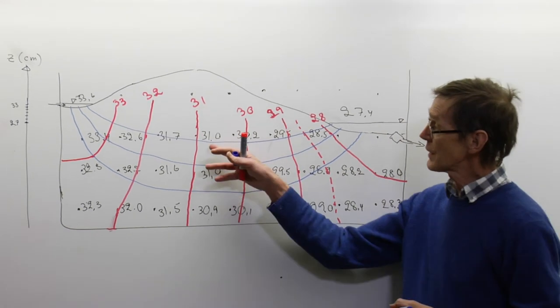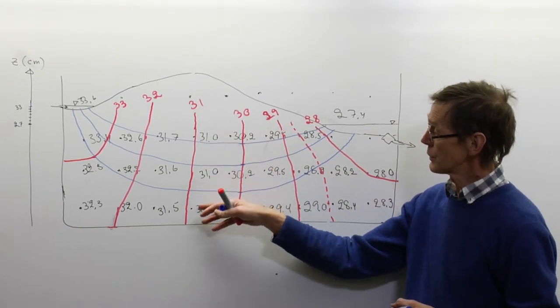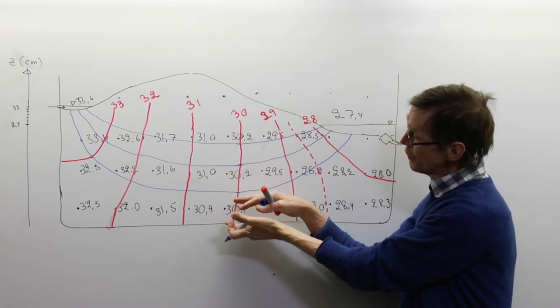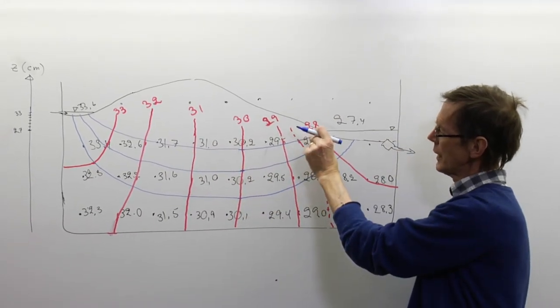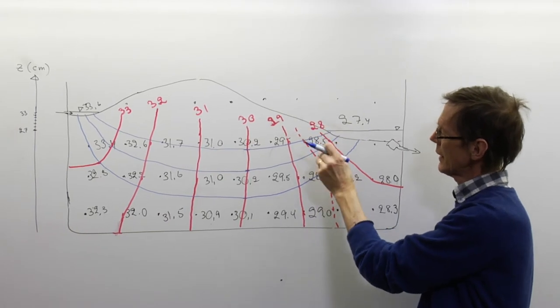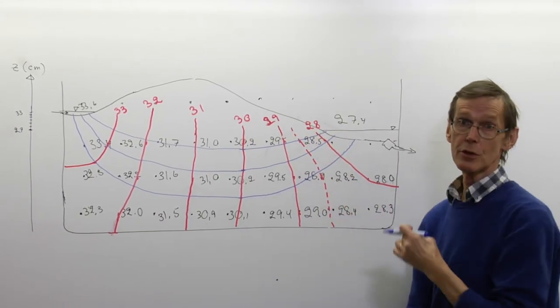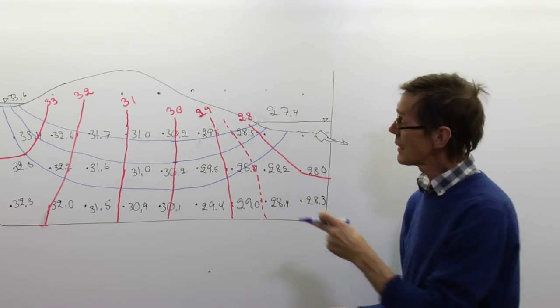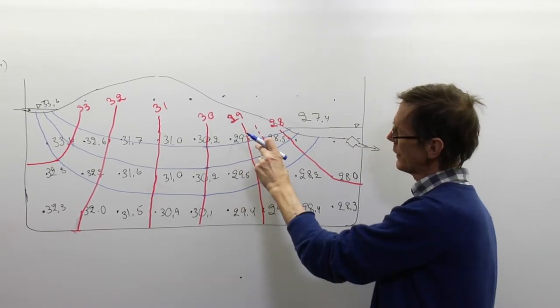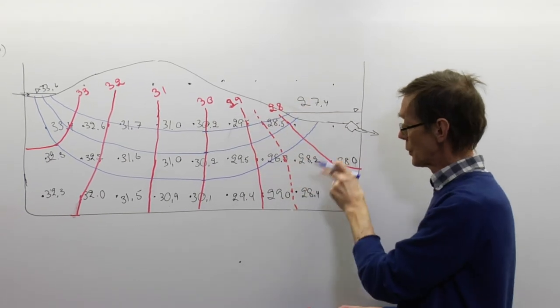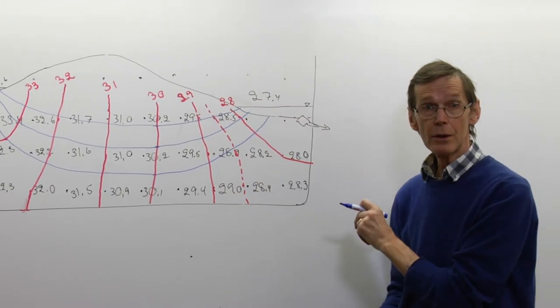The flow lines look something like this. If I have drawn them in this way with the same distance between the lines here, where the lines are roughly parallel, the distance between the lines shows the velocity of water. The closer the lines, the larger is the velocity. The same volume per time passes between two lines. Water moves quickly up here and slowly down here, which I hope we will see in the tracer test.